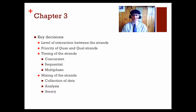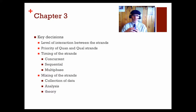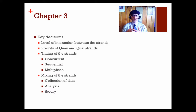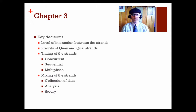There is also a set of key decisions that Cresswell and Plano-Clark discuss. Those key decisions include the level of interaction between the strands. A strand is the data collection, analysis, and execution within a particular approach. If you have a quantitative strand and a qualitative strand, how do they interact? Are they independent and very separate, or are they interrelated at different parts — for example, at data collection, data analysis, or when interpreting the results?